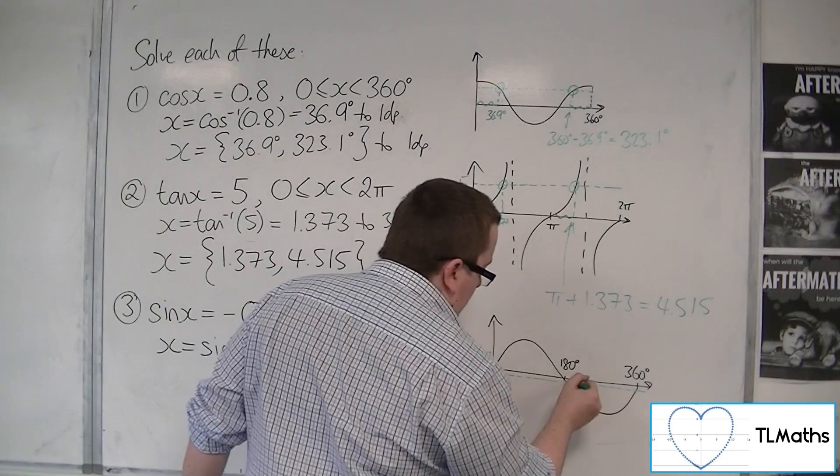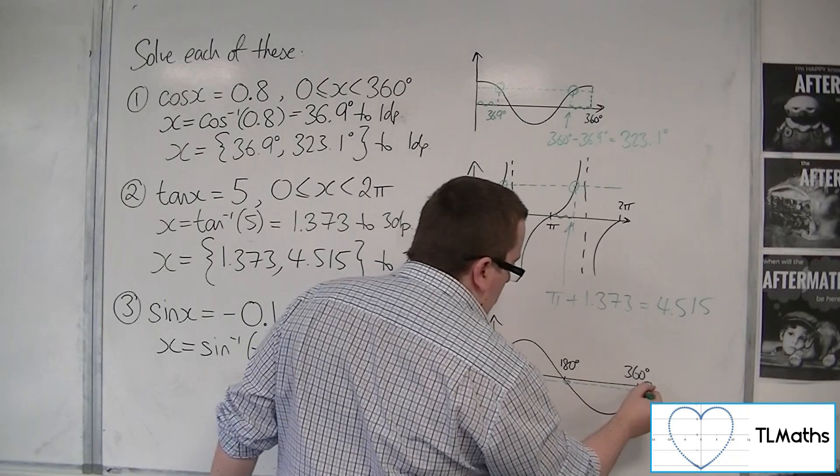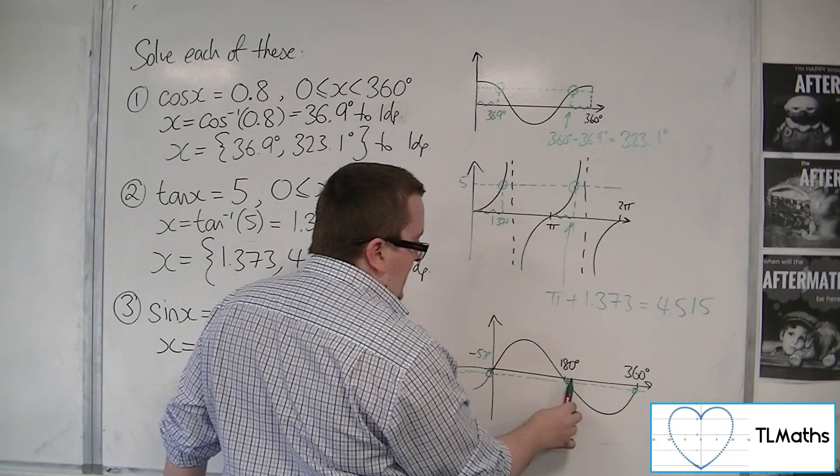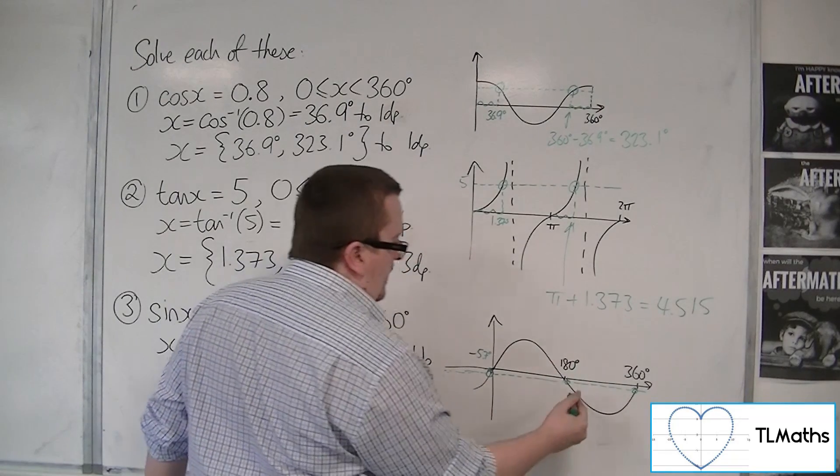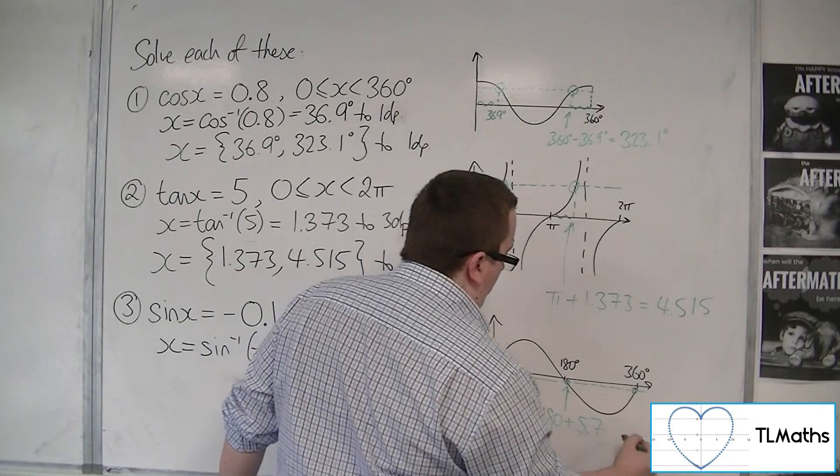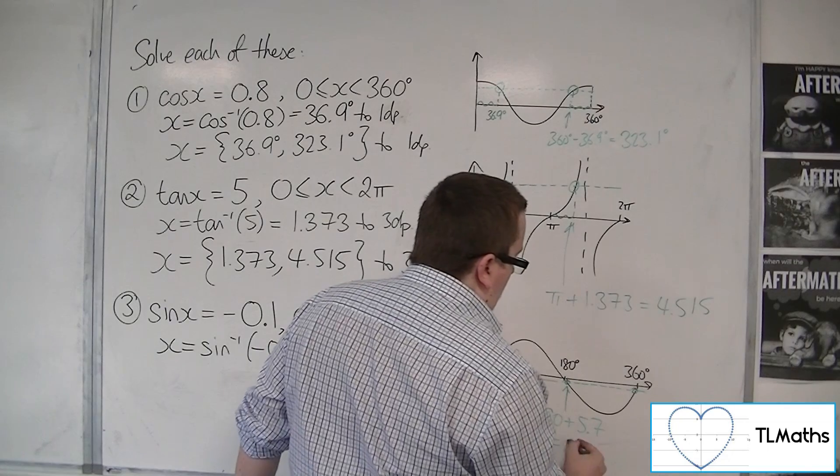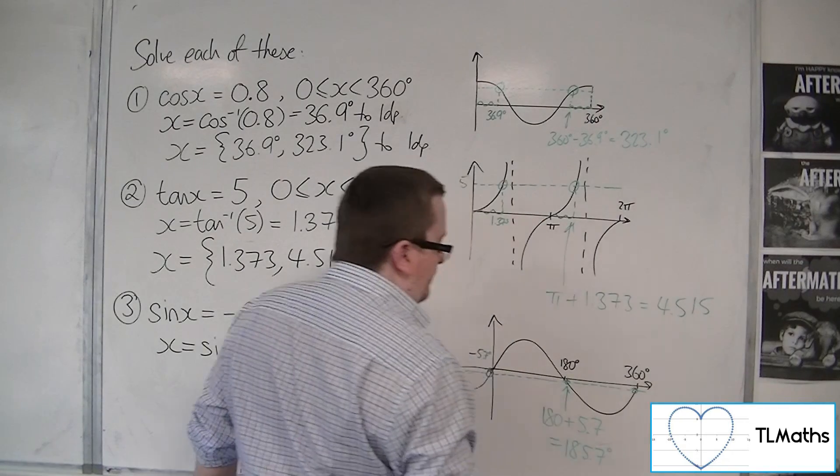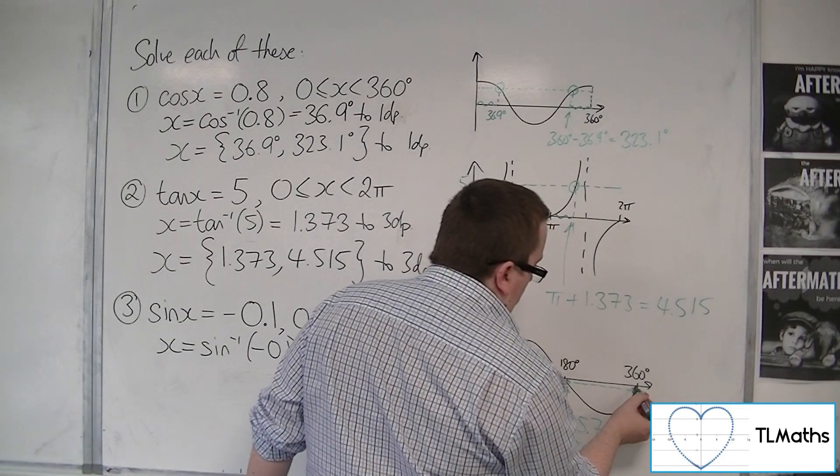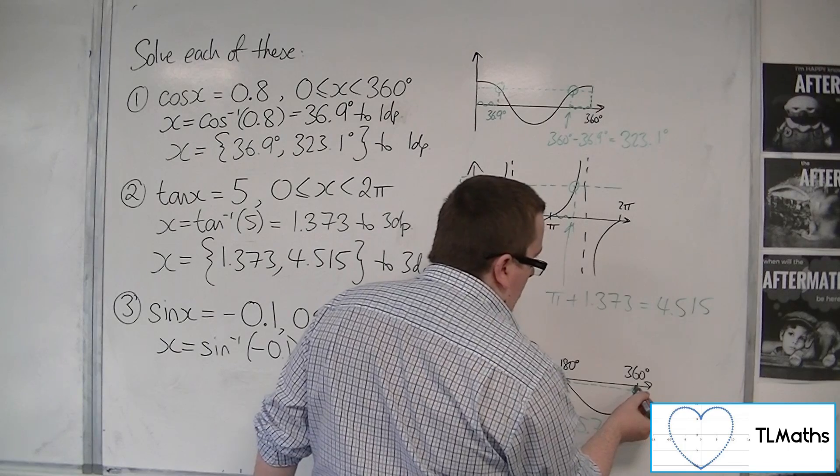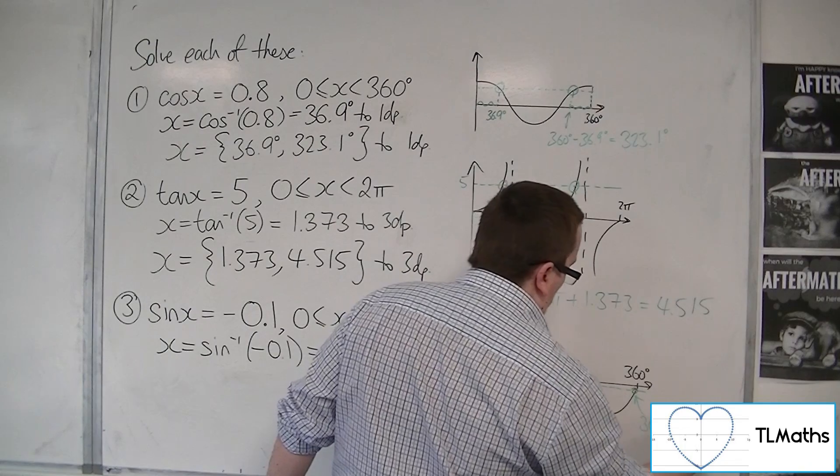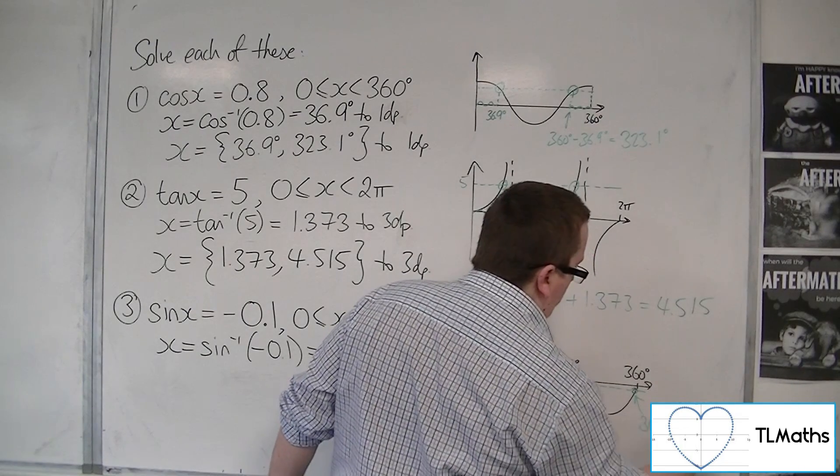This distance over here, because these are the two solutions that I want. The distance between 180 and the point that I want is 5.7, so I can work that one out by doing 180 plus the 5.7, which gets me 185.7 degrees. And this one can be found because that is 5.7 degrees to the left of 360 degrees, so we're going to have 360 take away 5.7.